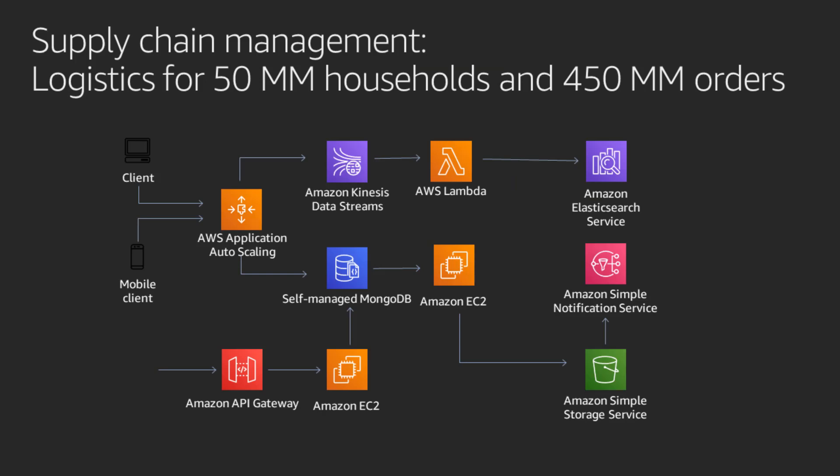Another popular use case is supply chain management. Supply chain as a vertical involves data coming and going at a very high rate — supply chain employees making changes on mobile clients, desktops, etc. As data is being updated in warehouses and wherever inventory is kept, all of this data is streamed in through an application tier represented by AWS Application Auto Scaling, through Kinesis Data Streams. It can then be processed in near real time using AWS Lambda, and the results stored in Amazon Elasticsearch Service where they can be visualized using Kibana.